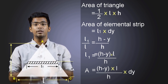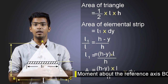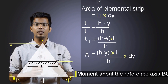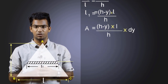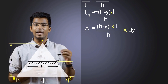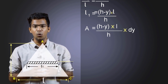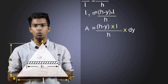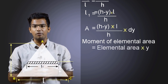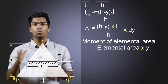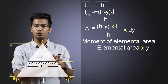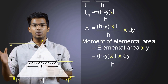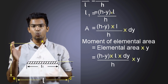After this, we will consider the moment of this small area above the reference axis BC. The moment is force multiplied by perpendicular distance. We consider the elemental area as force, and we know the perpendicular distance of this area from the axis. So the moment of elemental area equals area times Y. By substituting values for area, it will be (H minus Y) times L times DY divided by H, multiplied by Y.